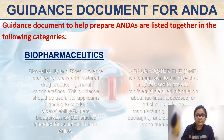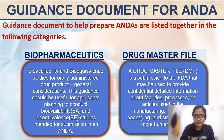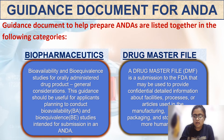Guidance documents for ANDA are listed in the following categories. The first is biopharmaceutics: bioavailability and bioequivalence studies for orally administered drug products — general considerations — providing guidance useful for applicants planning to conduct BA and BE studies intended for submission in an ANDA. The second is the Drug Master File, a submission to the FDA providing confidential detailed information about facilities, processes, or articles used in manufacturing, processing, packaging, and storing of one or more human drugs.